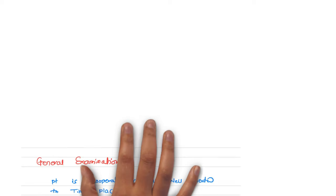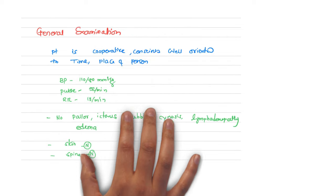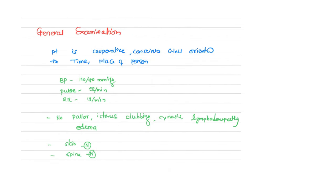General examination: if the patient is conscious, cooperative, and oriented, say 'patient is cooperative, conscious, well oriented to time, place, and person.' If the examiner asks how you determined this, explain you asked questions such as where are you and what time is it. BP is 110/80 mmHg, pulse is 92 per minute, respiratory rate is 18 per minute.